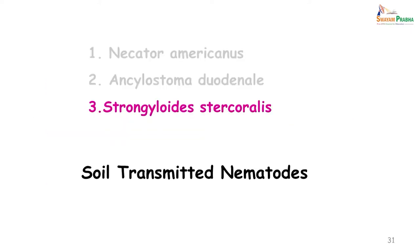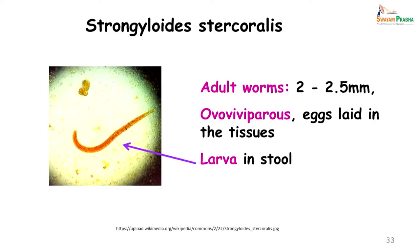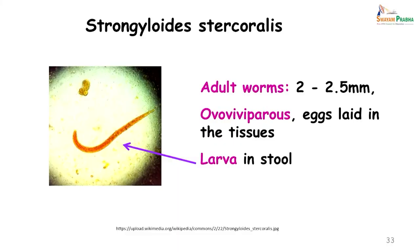Moving on to the next soil-transmitted nematode: Strongyloides stercoralis. The adult worm is only 2 to 2.5 millimeters in length. It lies in the cecum and the large intestine and usually the adult worm is not seen unless someone has done a colonoscopy. This worm is ovoviviparous — as soon as the eggs are laid, they immediately hatch into larval form. This is the only nematode in which we find larval forms in the stool; you will never find the ova of Strongyloides stercoralis.